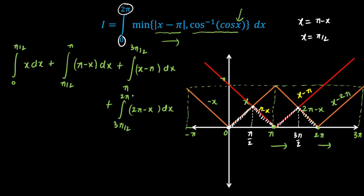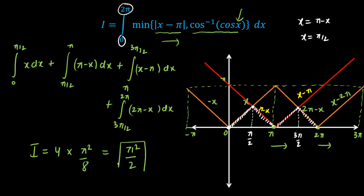Alternatively, you can calculate the area of four triangles. If you calculate the area of four triangles, you get 4 × (π²/8). That is one more way to calculate, and through integration you will end up getting the same answer. So 4 × π²/8 gives π²/2, and that is our final answer.